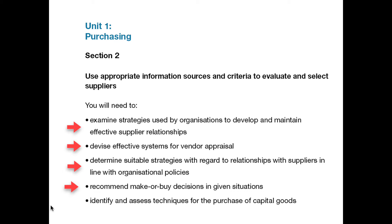Finally, capital goods are items that are expected to last or be in use technically for at least one full financial year, but in reality for at least three years. They include items such as machinery, plant, vehicles, computer networks — items which are purchased outright, not rented or hired. You will need to research techniques used to purchase such goods, including confirming need, identifying and selecting a supplier, financing, and describe these in outline.